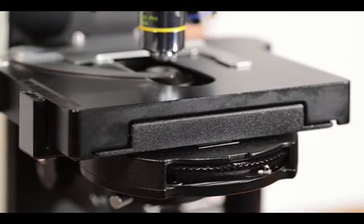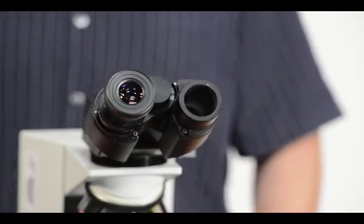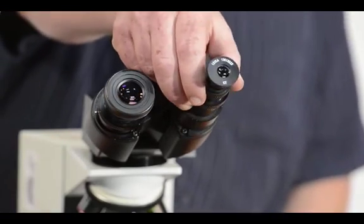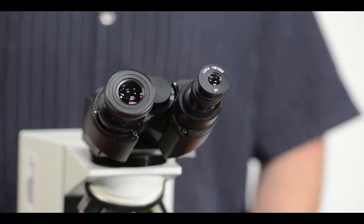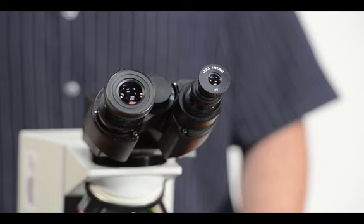Once the objective lens and filter have been set, remove the right eyepiece. Insert the phase contrast telescope where the right eyepiece is normally placed. We use the phase contrast telescope to help us visualize our alignment.